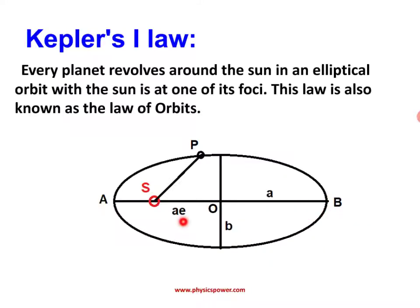Here, 'e' is the eccentricity. We analyze the curve of the planet using the eccentricity value. If the eccentricity is greater than 1, it is a hyperbola. If it equals 1, it is a parabola. For a planet, the eccentricity is less than 1 — it forms an ellipse. This is how Kepler identified that the planet's orbit around the sun is elliptical.